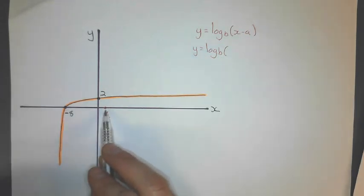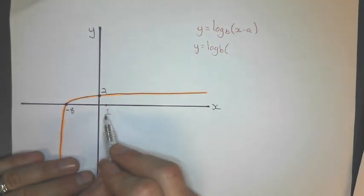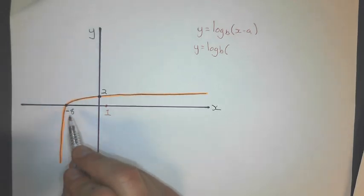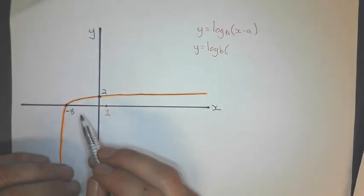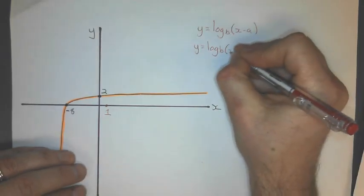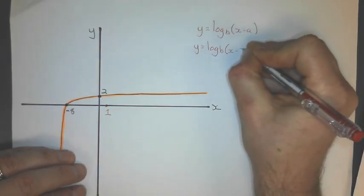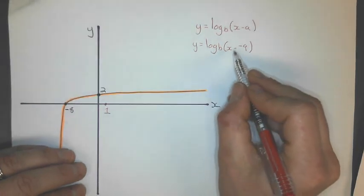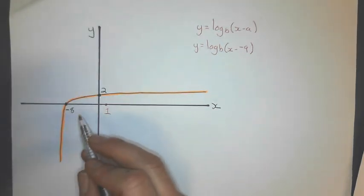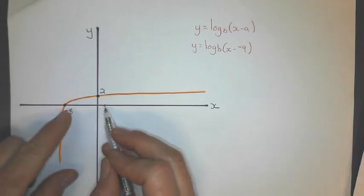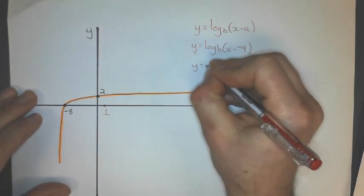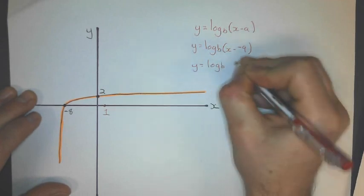And so how many units over is it from 1 to negative 8? It's 9. And it's 9 units to the left. So what I'm really saying is x minus a negative 9, which just gives me x plus 9. So that's a tricky thing is the basic log equation goes through 1 and not 0. So that's shifting 9 units, not just 8. So I get y equals log base b, x plus 9.